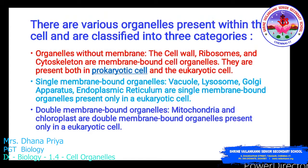There are various organelles present within the cell, classified into three categories based on their outer membrane: organelles without membrane, single membrane-bound organelles, and double membrane-bound organelles.